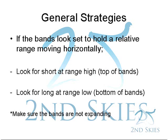The general strategies for trading the Bollinger Bands are relatively simple. If the bands look set to hold a relative range and are moving horizontally, the general strategy is to short at the range high — the top of the bands — and to buy or go long at the range low — the bottom of the bands. The one thing we want to make sure with this strategy is that the bands are not expanding by any means.